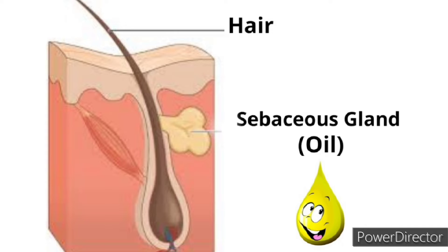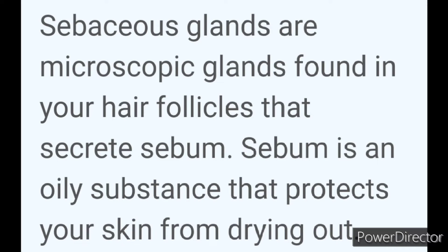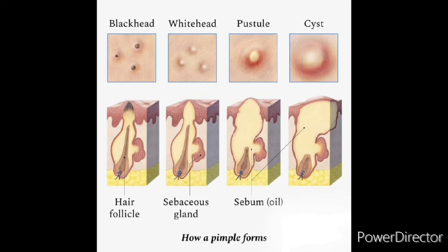These are always going to be attached to a hair follicle. These are microscopic glands found in the hair follicles that create sebum, which is an oily substance that helps to protect your skin and keep it from drying out. When the opening of a hair follicle gets clogged by sebum or dead skin, it can create everything from a blackhead all the way up to a large cyst. These are some images of what the progression of these clogs can look like.